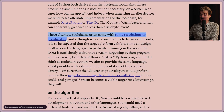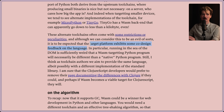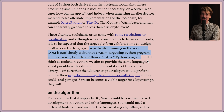So we just saw there are definitely some differences here, and although we can consider this to be an evil of sorts, it is to be expected that the target platform exhibits some co-design feedback on the language. We've been spoiled nowadays that Windows, Mac, and Linux are finally getting to a point where we can target them without having to write too much custom code for each one. Running in the sea of the DOM is sufficiently weird that a Wasm-targeting Python program will necessarily be different than a native Python program. To be fair, UI in Python has been a mess for literally ever, so Python having a real UI layer, in this case the DOM, sounds actually pretty compelling.